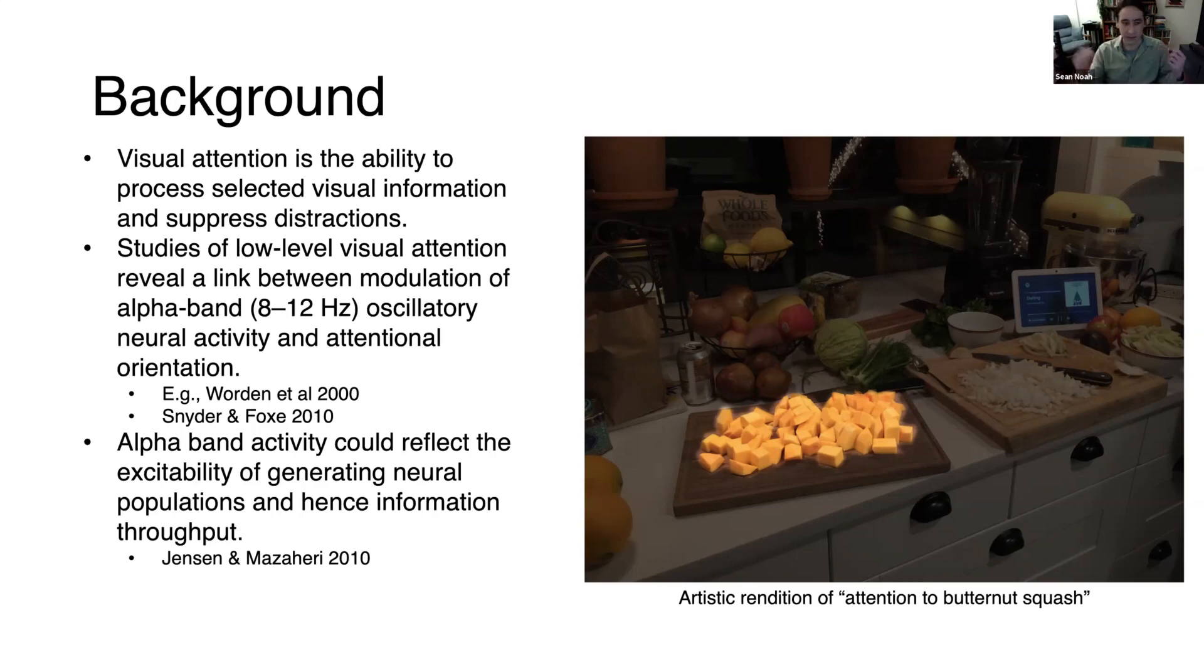Alpha is thought to reflect widespread synchronized firing that might influence the excitability of neurons in the population that generate that alpha signal. If the brain can selectively modulate alpha power in different parts of the brain simultaneously, that could be part of a mechanism of selective gating to control the flow of sensory signals through hierarchical stages of processing. There's been widespread study of the role of alpha band activity in visual attention to low-level visual features.